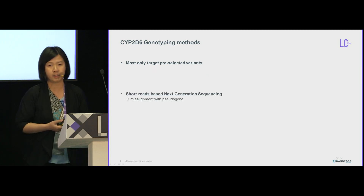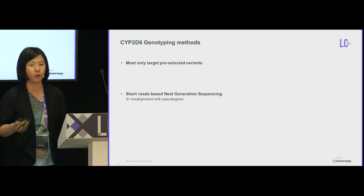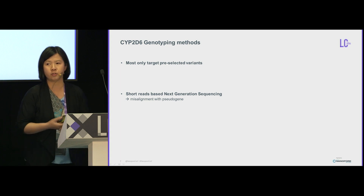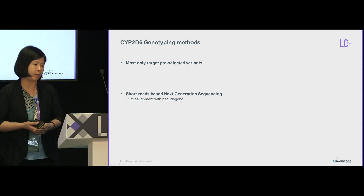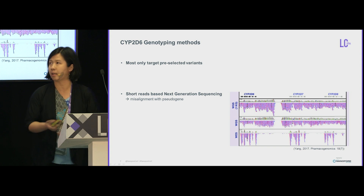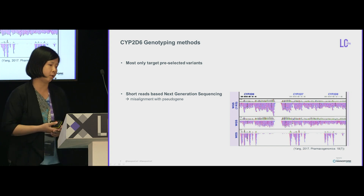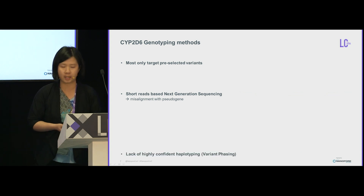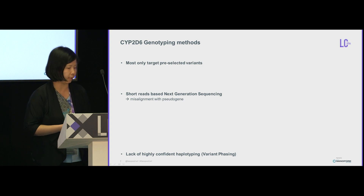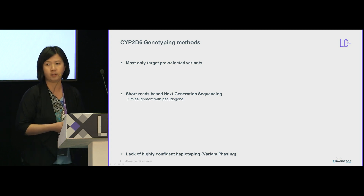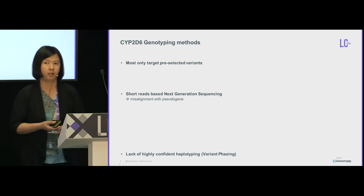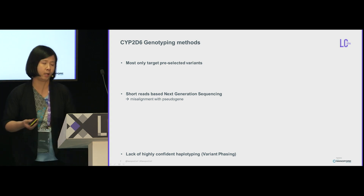Short-read-based NGS methods can, of course, target the whole gene. However, it is not actually the method of choice for CYP2D6, because the short nature of the technology causes misalignment issues with the pseudogene, as shown in published literature. In whole-genome or whole-exome sequencing, the CYP2D6 information is not actually very accurate. Probably most importantly, most of these methods lack confident and straightforward variant phasing, thus failing to provide haplotype information.